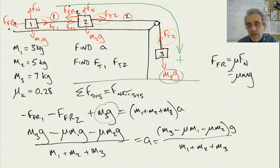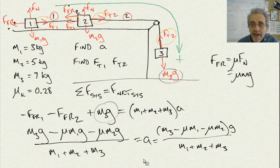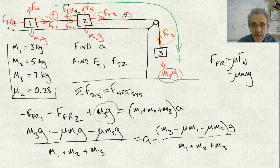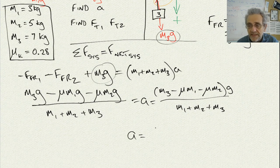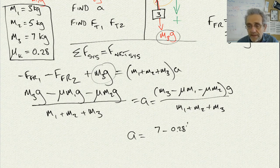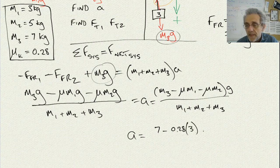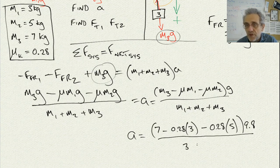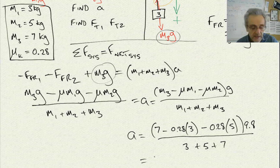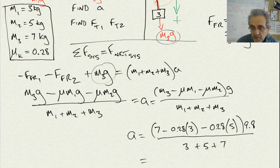Now, now that I have the equation, why don't I go ahead and put these values in to my acceleration and calculate what it's going to be. So M3 is 7 minus 0.28 times M1, which is 3, minus 0.28 times M2, which is 5. And then I can multiply all that by G. And then divide that by 3 plus 5 plus 7. And let me put that through my calculator. So the acceleration I got is 3.1 meters per second squared.